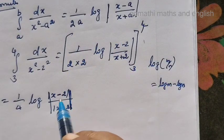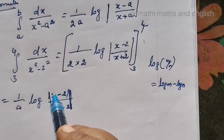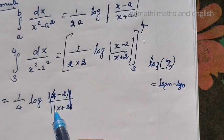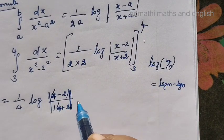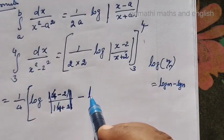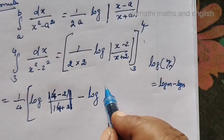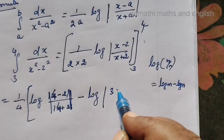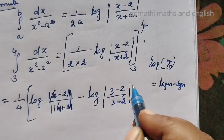Equals upper limit minus lower limit. Upper limit is 4 minus 2 over 4 plus 2, then minus lower limit: log of 3 minus 2 over 3 plus 2.